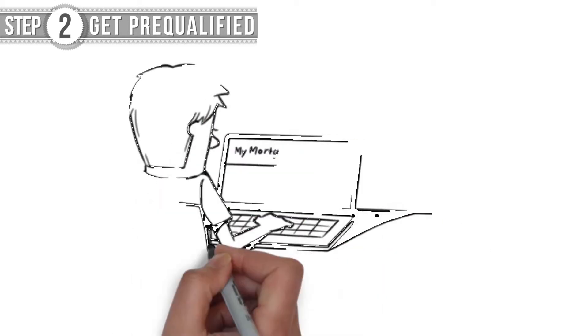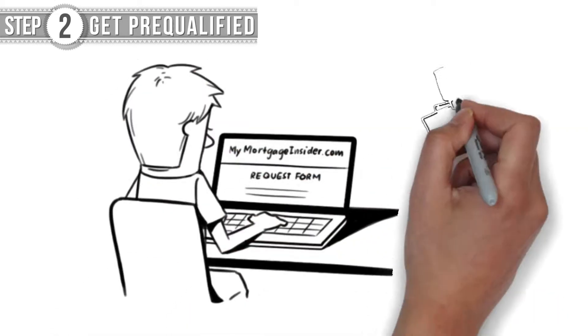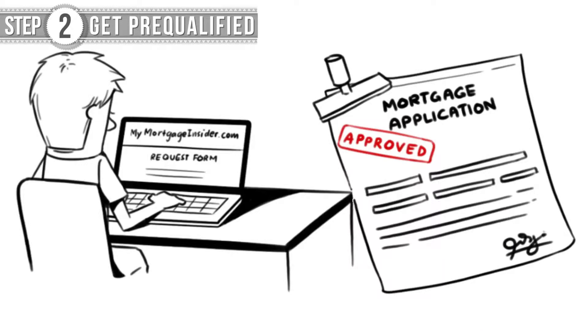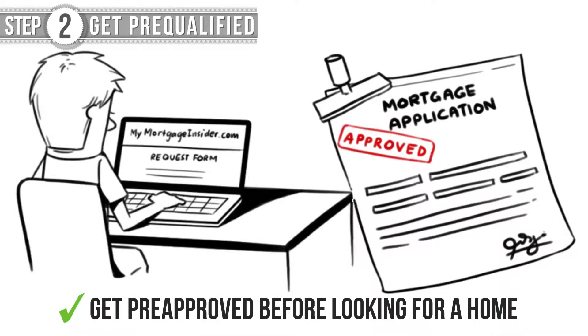Step 2. Get pre-qualified. Call a reputable lender or simply go to mymortgageinsider.com/quote. You'll need a pre-approval before looking for a home.